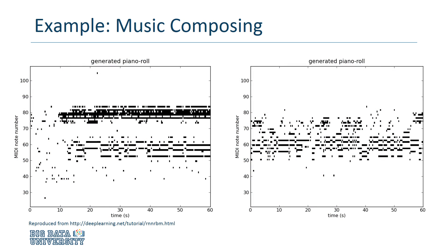Another application for recurrent nets is music composition. A network can be trained using MIDI files, which are a type of standard for digital audio. After learning about rhythm and melodic patterns, the net can output data that can be converted back to the MIDI file format and listened to.